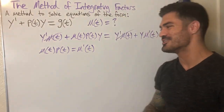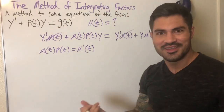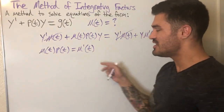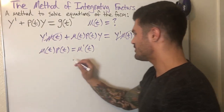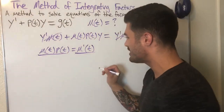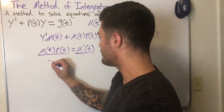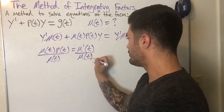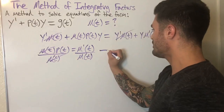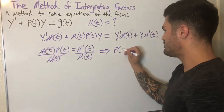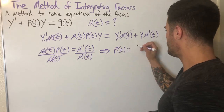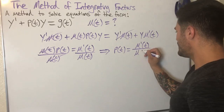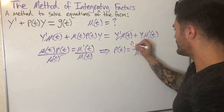Instead of dividing both sides by p of t, I'm going to divide both sides by mu of t. That gives me p of t equals mu prime of t over mu of t. Now I'm going to integrate both sides.